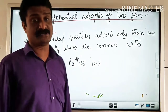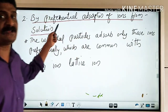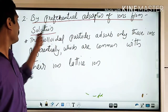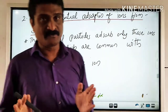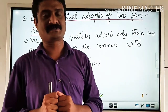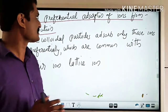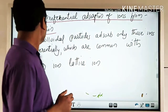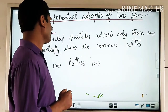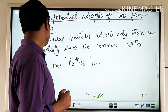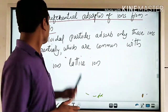Number two: colloidal particles are charged by preferential adsorption of ions from solution. The colloidal particles adsorb only those ions from the solution which are common with their own lattice ions.